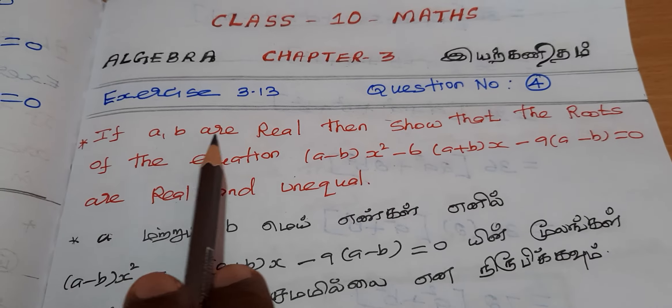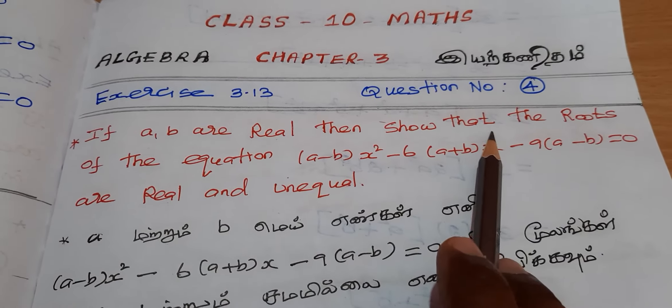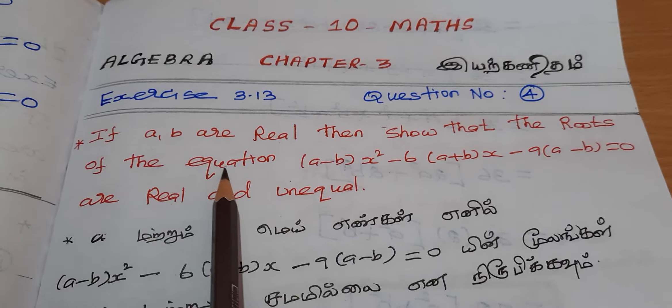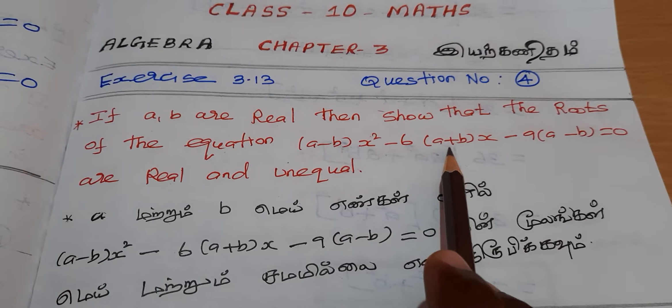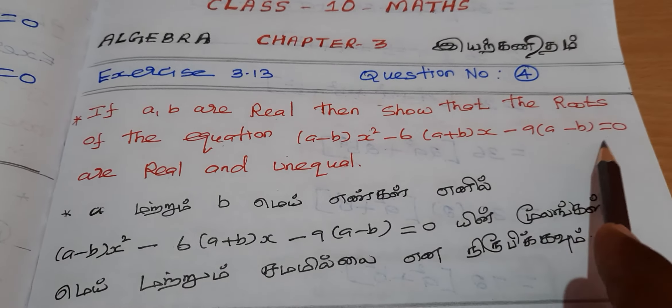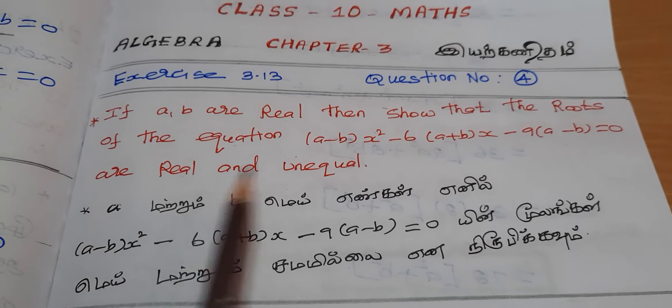If a, b are real, then show that the roots of the equation (a-b)x² - 6(a+b)x - 9(a-b) = 0 are real and unequal.